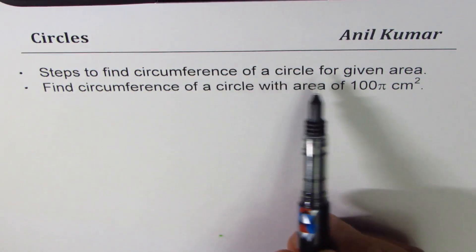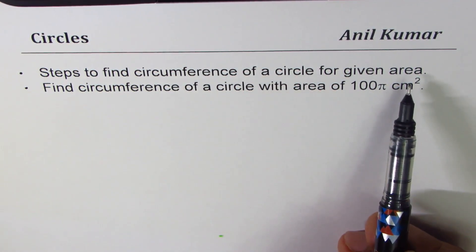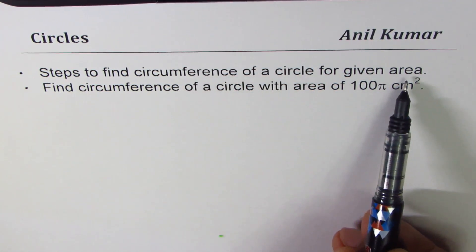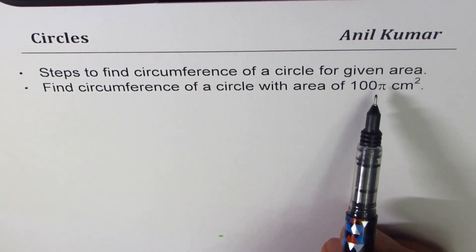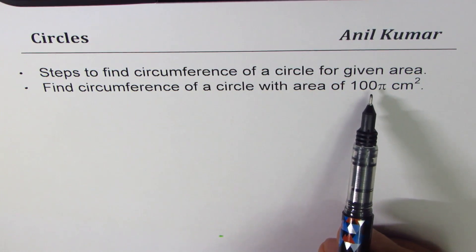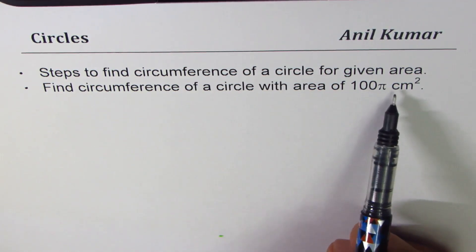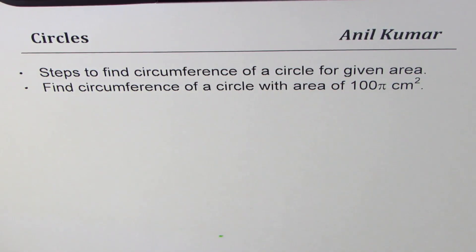So once we derive a formula which relates circumference with area, then we will use that formula to find the circumference when area is 100π cm². So that is what we are going to do in this particular video.